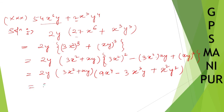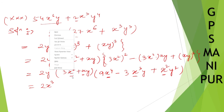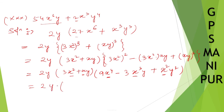Now you can take X common from each factor. From (3x² + xy) take x common to get x(3x + y). From (9x⁴ − 3x³y + x²y²) take x² common to get x²(9x² − 3xy + y²). So combining: x times x² is x cubed. Write it as 2Y times x(3x + y) times x²(9x² − 3xy + y²).